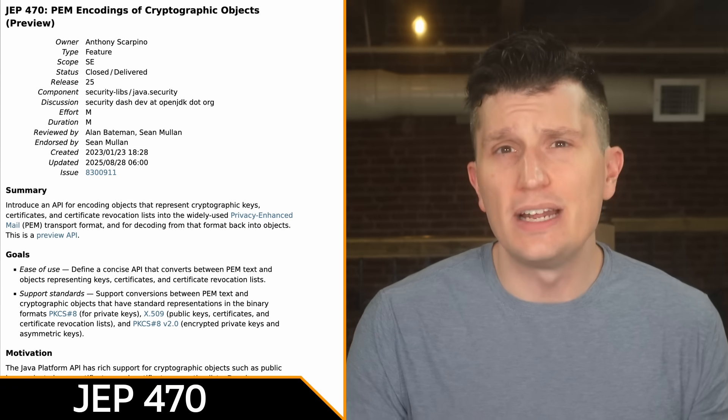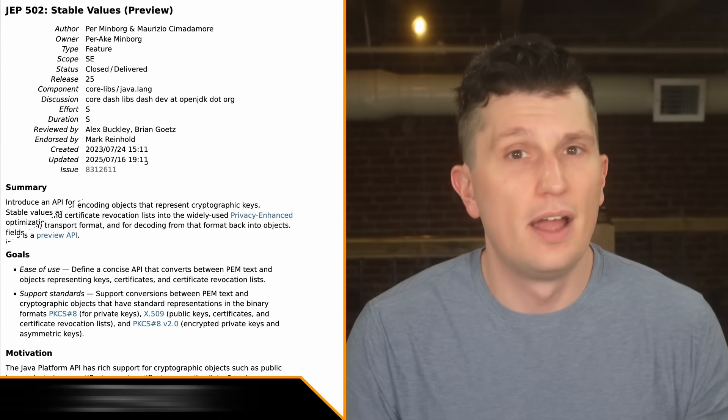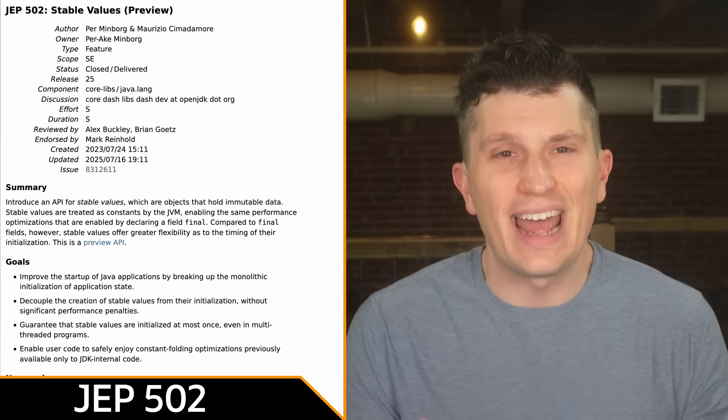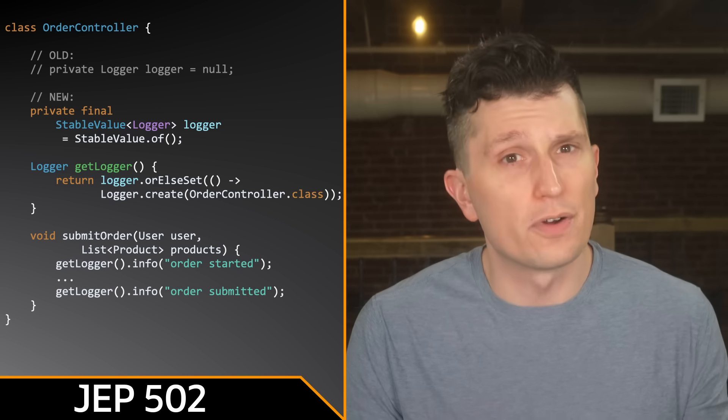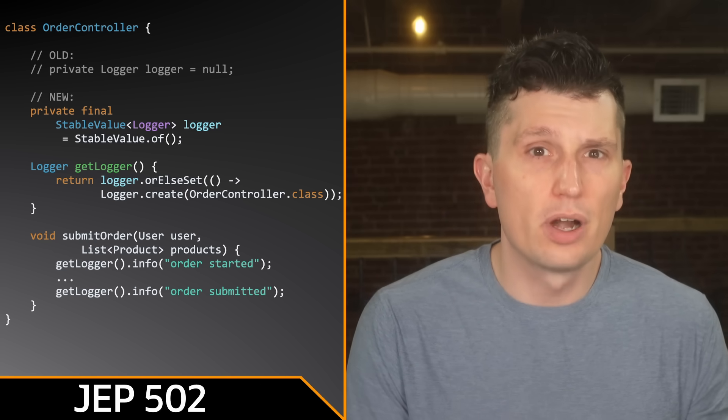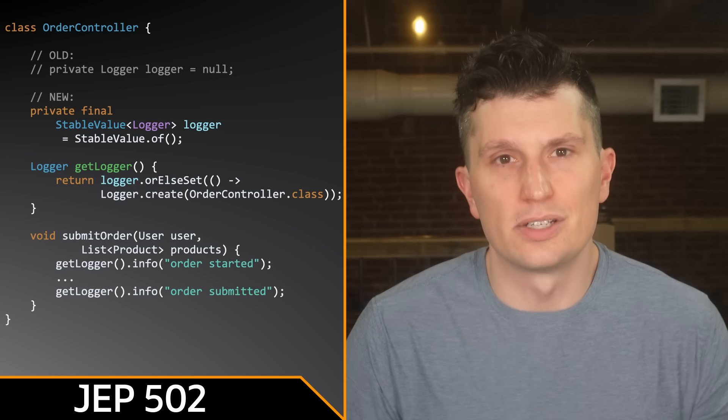There are six preview features or experimental features in JDK 25. JEP 470 is a preview API for encoding and decoding objects in the widely used privacy-enhanced mail format. Stable Values provides an API for immutable values that can be treated as constants by the JVM, but offer greater flexibility as to when the value is set than currently provided by the final keyword, which requires the value to be set at either class or instance initialization.